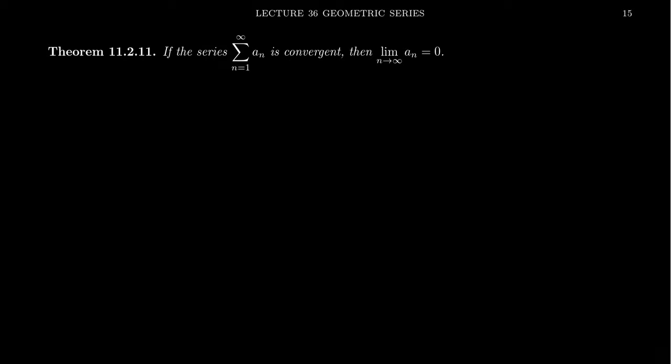In this video, we're going to talk about what's known as the test for divergence. In previous videos, we talked about how one tests whether a geometric series is convergent or divergent. It all comes down to the constant ratio — if the constant ratio is small, the geometric series is convergent; if it's big, the geometric series is divergent. For other sequences, their series won't be as easy to determine.